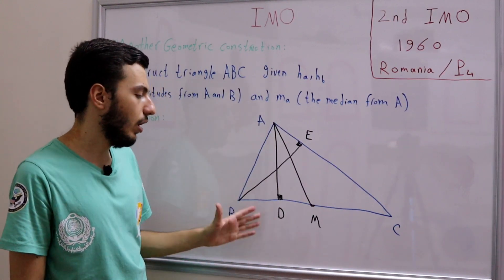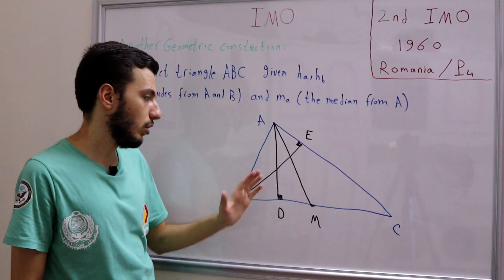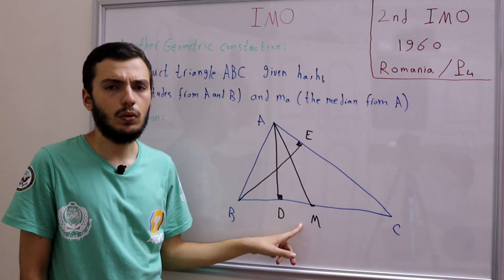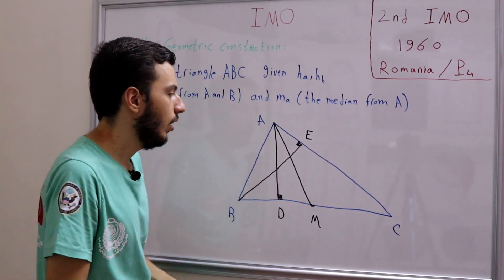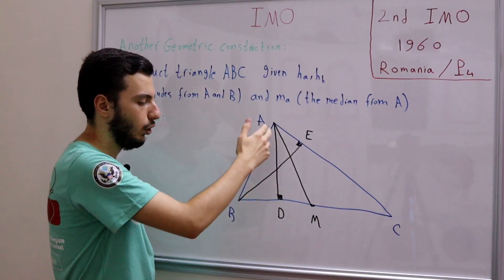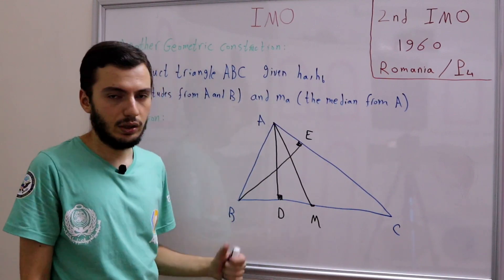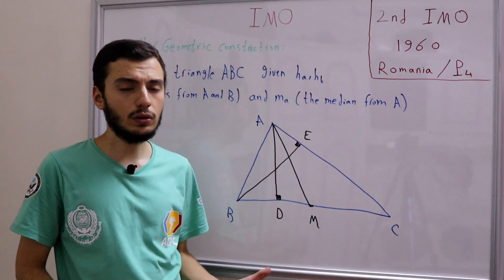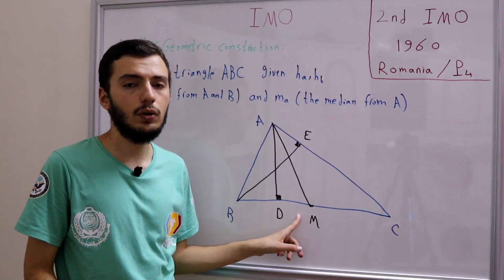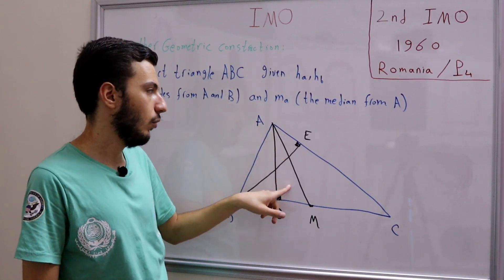Now we need to find a way to link AD, AM, and BE to construct triangle ABC. It makes sense to start with AD and AM because we already have a nice triangle ADM. If we know the value of AM and the length AD, we can construct triangle ADM. Remember, we can only use a compass and a ruler in our constructions.